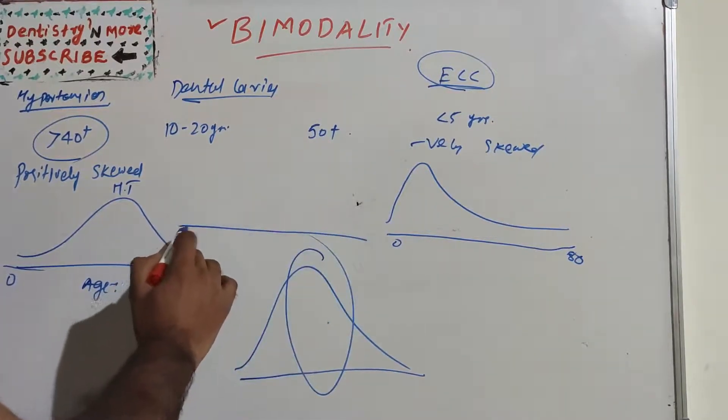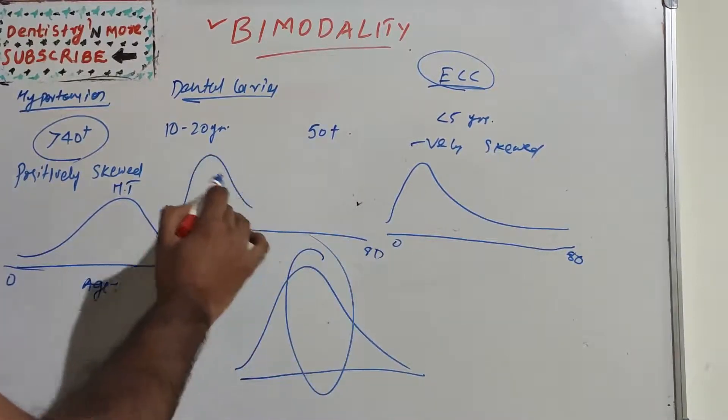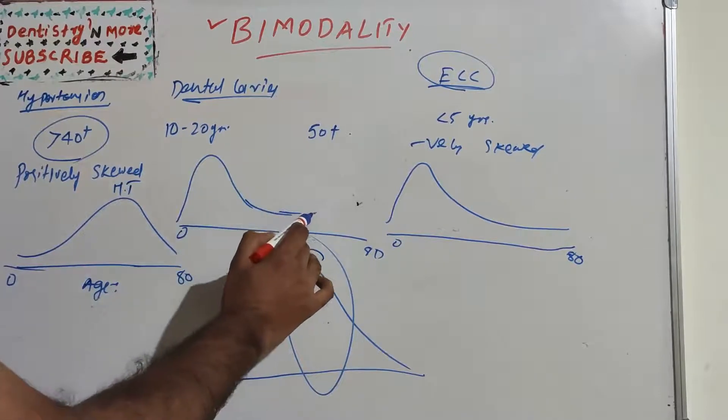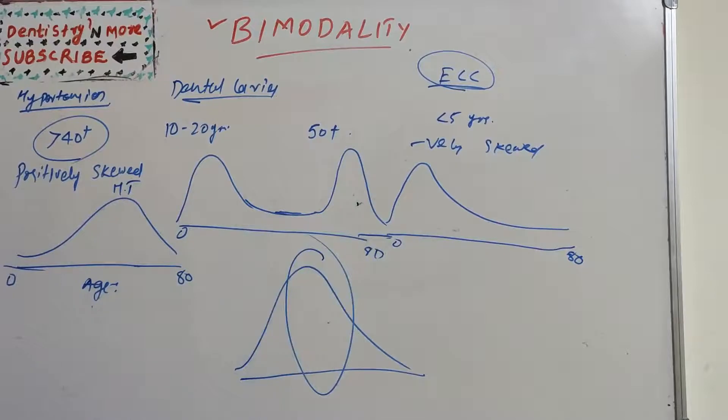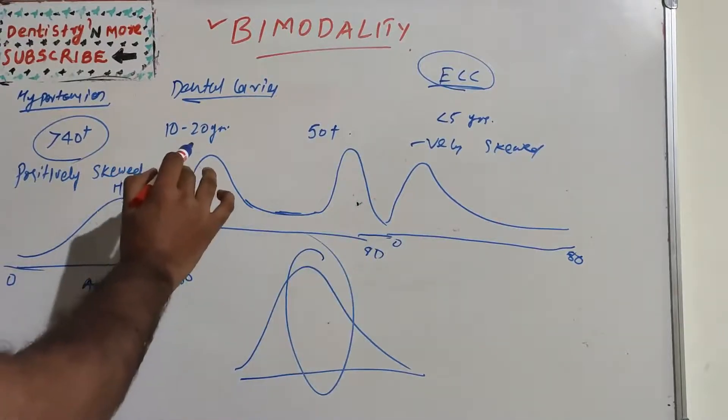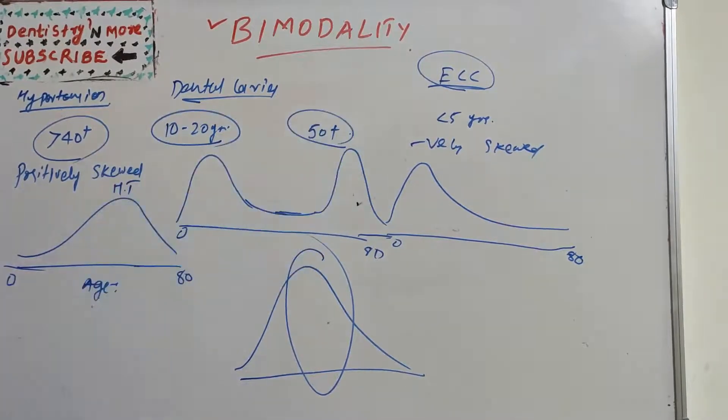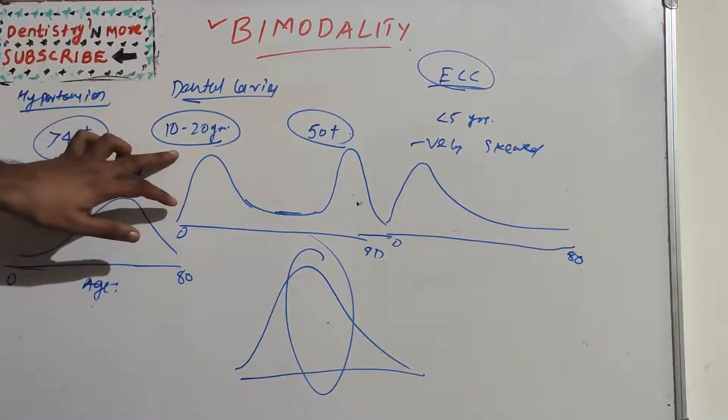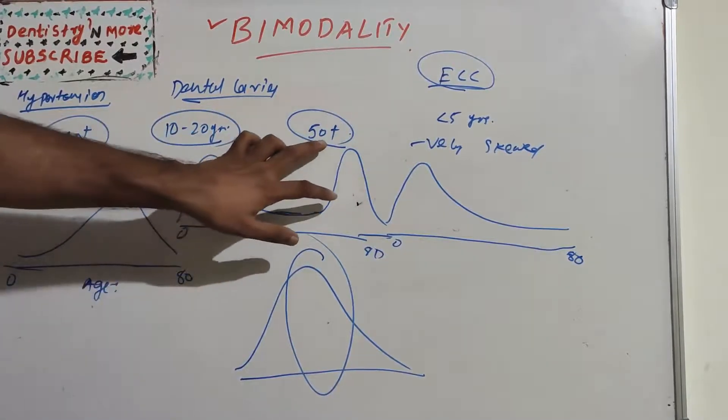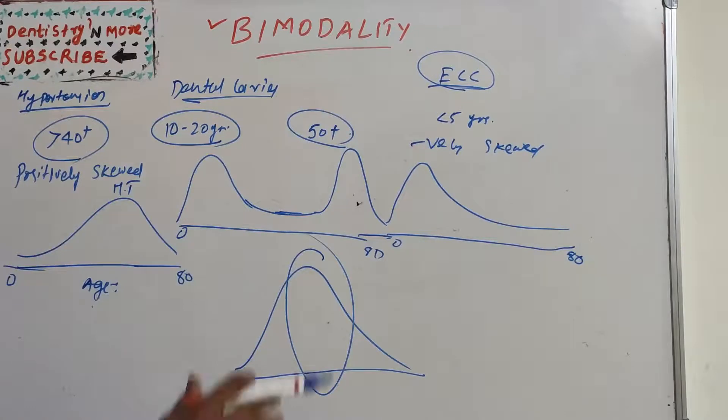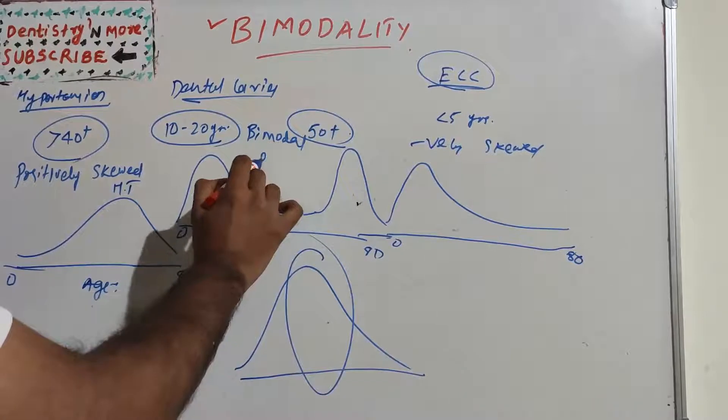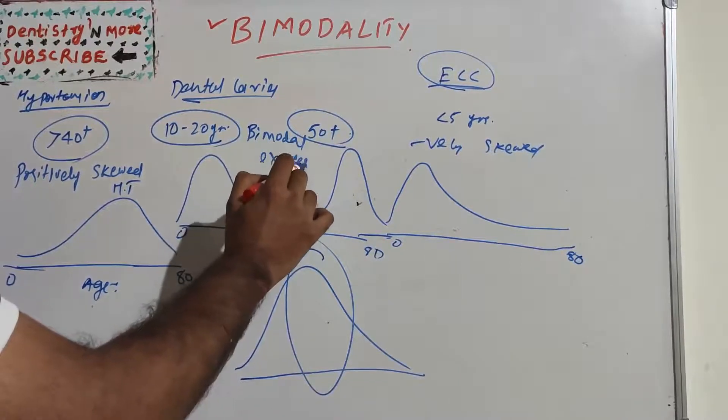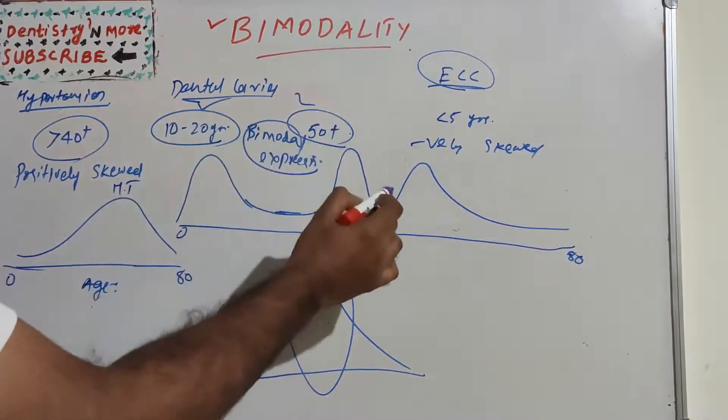Now let's come back to dental caries. It will be like 0 to 80. One peak will come here, that is 10 to 20 years, then it will be a flat curve, then again it will be a peak. So it is reported highest incidence in the 10 to 20 years and 50 years.